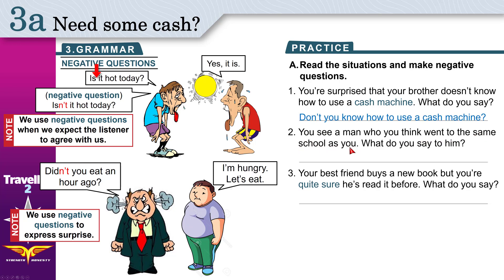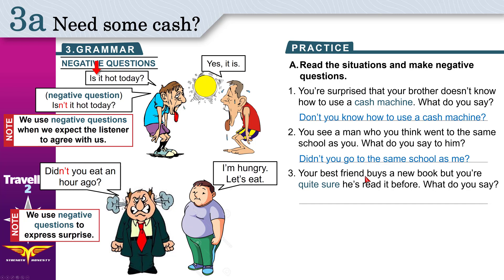Second situation: you see a man who you think went to the same school as you. Since this happened in the past, use 'did' and add 'not' to make it negative: 'Didn't you go to the same school as me?' or 'Didn't we both go to the same school?' More than one answer is possible.